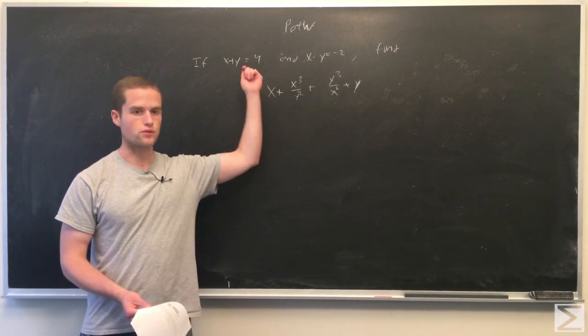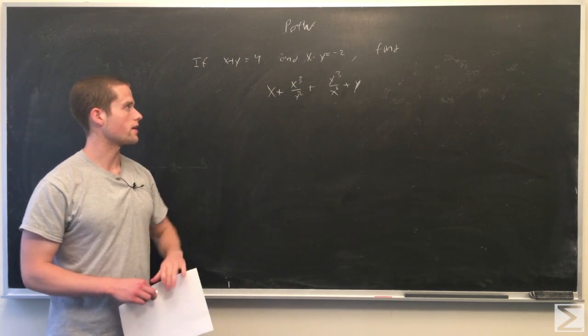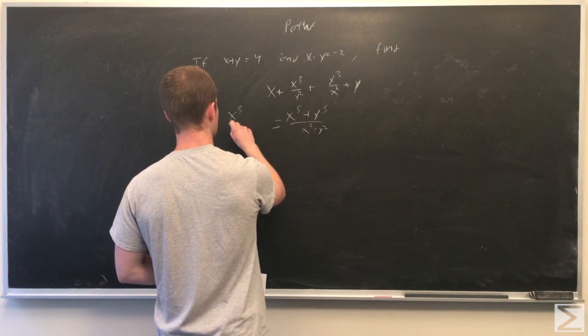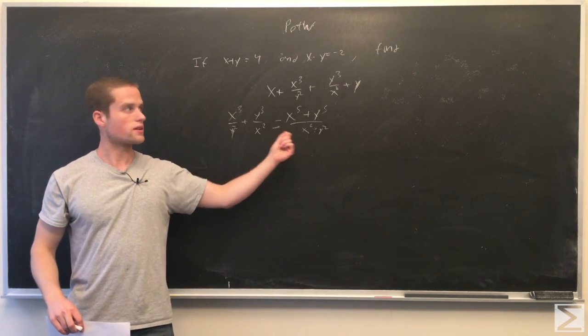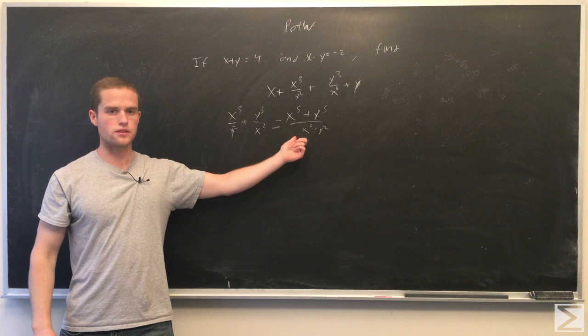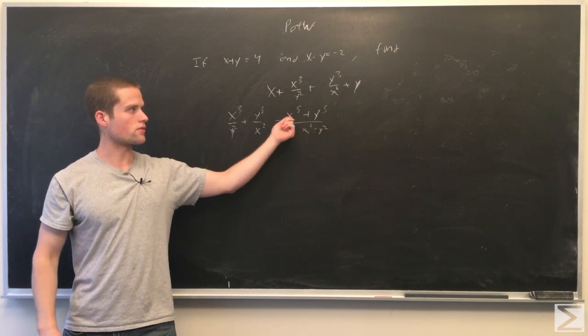So x plus y we're given equals 4, and this we can write as x to the fifth plus y to the fifth over x squared times y squared. So from this expression, this suggests we look into finding what x to the fifth plus y to the fifth equals.